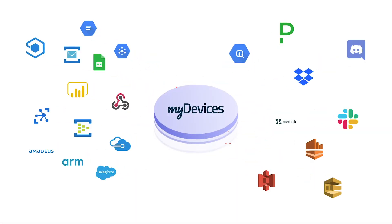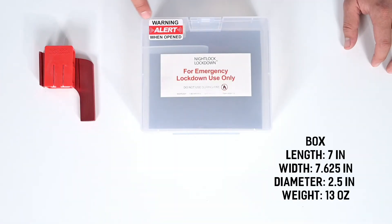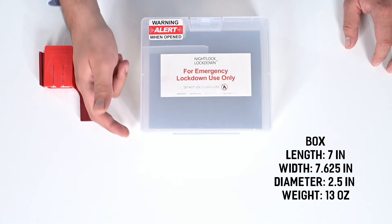Data types for this device include open, close, and barricade. The box has a length of 7 inches, a width of 7 and 5/8 inches, a diameter of 2.5 inches, and weighs approximately 13 ounces.